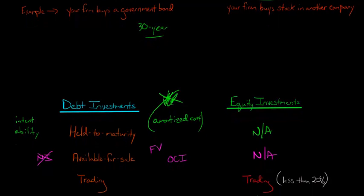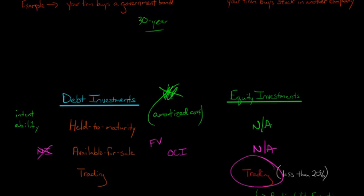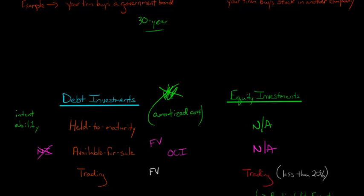So what are equity investments classified as generally? If you own less than 20% — when you purchase stock in another company and you own less than 20%, which is usually the case for a small position of 2%, 1%, or less — it is classified as trading. Trading can apply to both equity investments and debt investments. Trading means the investment is going to be marked to market at fair value on the balance sheet, but any unrealized gains or losses flow through net income. That's different from available for sale, where they go to the OCI account — with trading, they flow through net income.